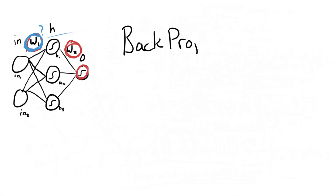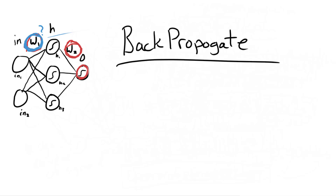Hey guys, this is Eden and we are back for part four of this series. In this tutorial we will go through back propagation and finally finish our first neural network from scratch. Back propagation - where we left off last time - we have the issue that when building a neural network we don't know what our hidden layer is supposed to be, whereas with our output layer we have a label. Once we calculate the loss at our output layer, we need to back propagate it backwards.